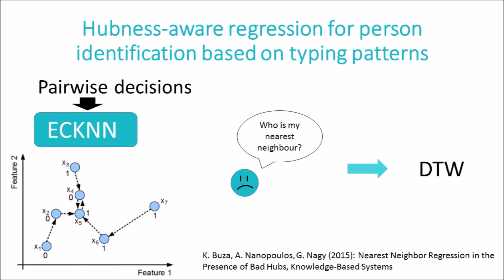For the aforementioned pairwise decision models, we propose to use the classification via regression approach. Concretely, we propose to use k-nearest-neighbor regression with error correction. It is a hubness-aware extension of k-NN regression and is suitable for time series classification. In our case, the instances are time series, and in order to use ECKNN with time series, we need to determine the nearest neighbors of the time series. For this, we use dynamic time warping, which is one of the most prominent time series distance measures.